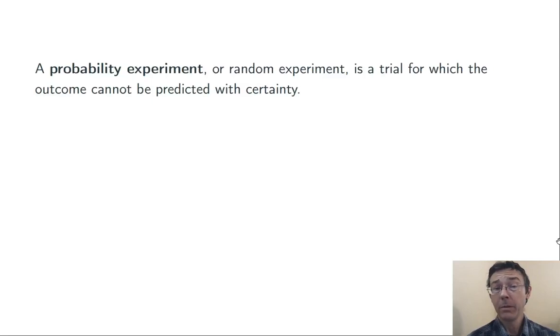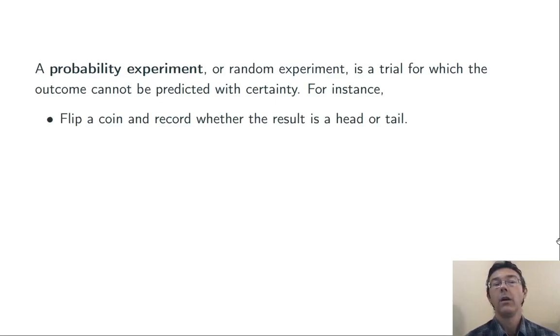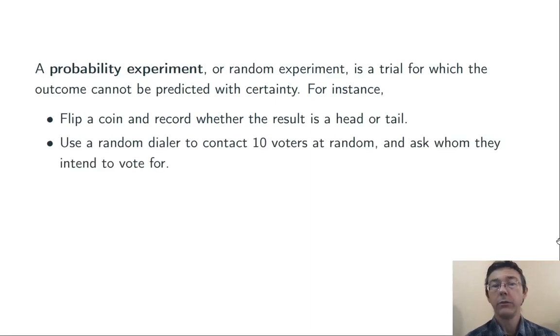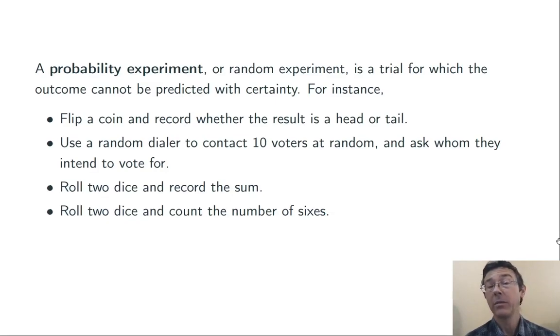A probability experiment, or random experiment, is a trial for which the outcome can't be predicted with certainty. Although if you run the trial over and over again, certain trends may emerge. Here's a few examples: Flip a coin and record whether the result is a head or a tail. Use a random dialer to contact 10 random voters and ask whom they intend to vote for. Roll two dice and record the sum. Roll two dice and count the number of sixes.